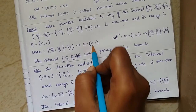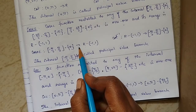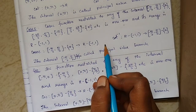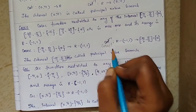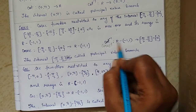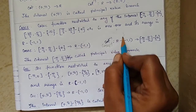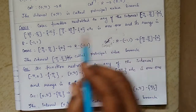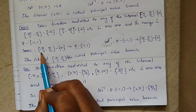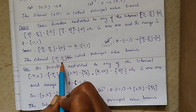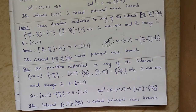Since the cosecant function is bijective, cosecant inverse exists. The domain of cosecant inverse is R minus (-1, 1) and the range is [-π/2, π/2] minus {0}. This is the principal value branch of cosecant inverse.